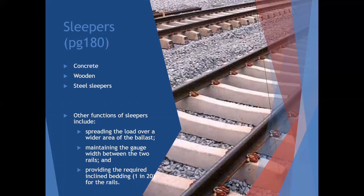Then you get sleepers - there's more detail on page 180. You get concrete ones, wooden ones, and steel sleepers. Other functions of sleepers include spreading the load over a wider area of the ballast, maintaining the gauge width between the two rails, and providing the required inclining bedding. They are very important for strength, taking the weight of the train and distributing it across the ballast.